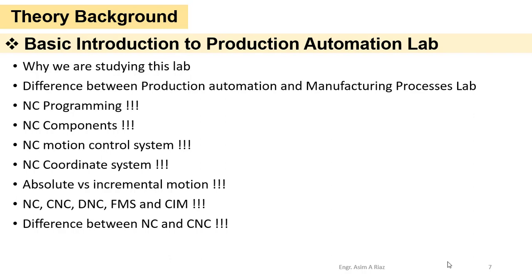Another aspect of motion control concerns how position is defined. If each position is measured from the last point as a reference, it is called incremental positioning or incremental motion control. If each position is measured from a fixed origin, it is called absolute positioning or absolute motion control.